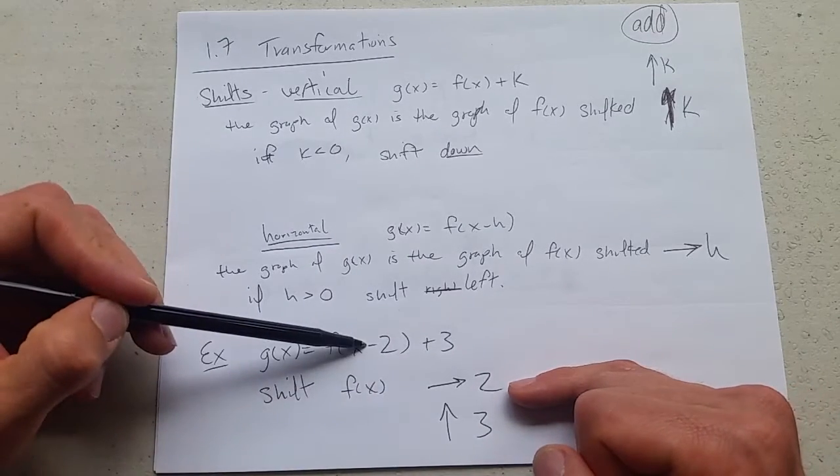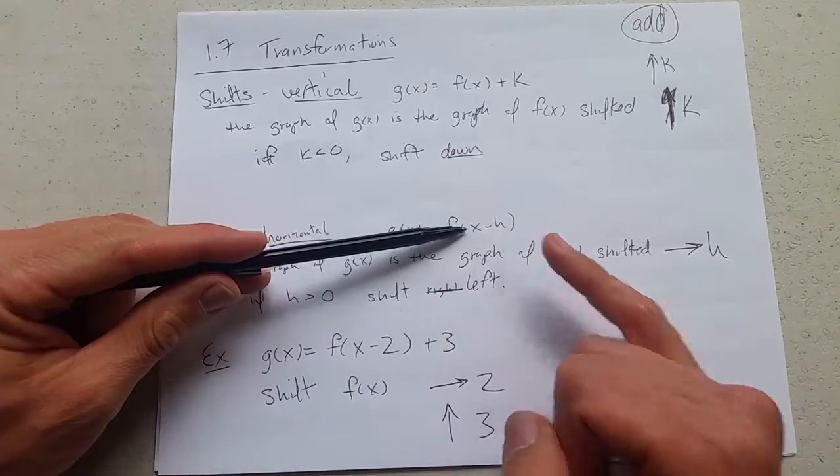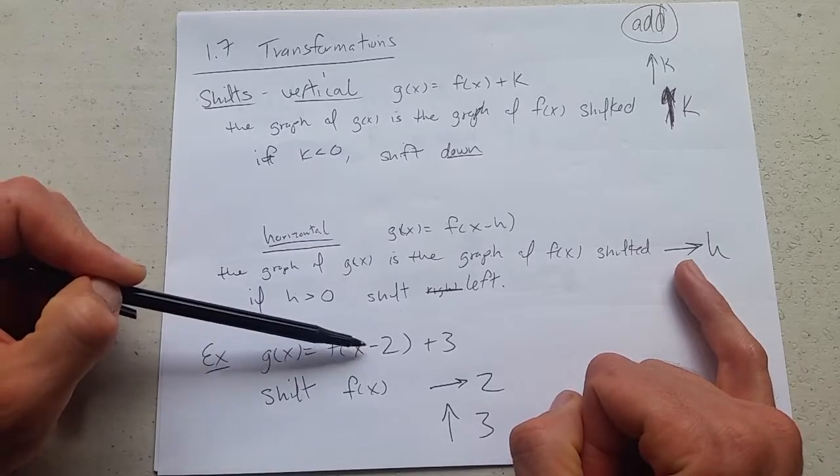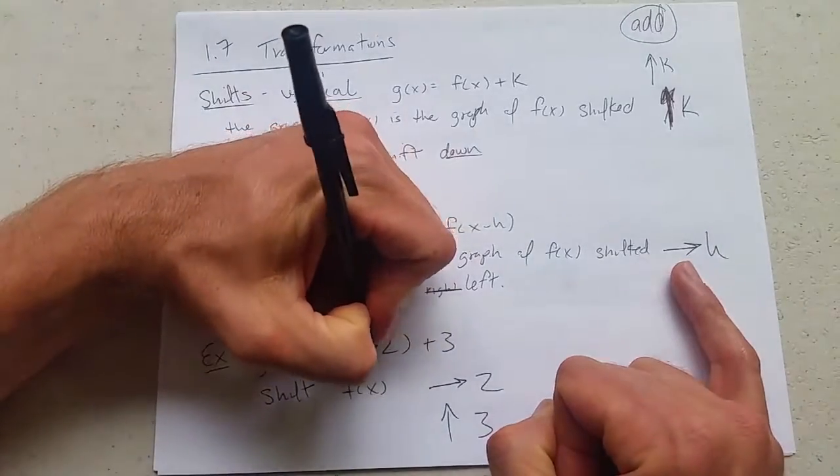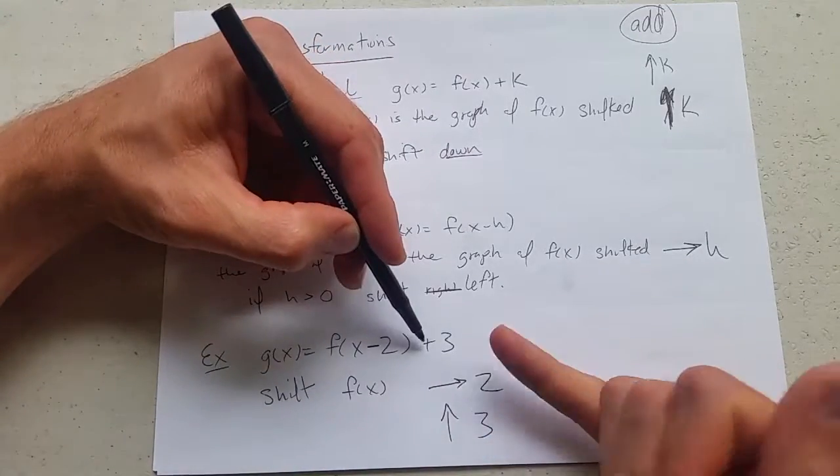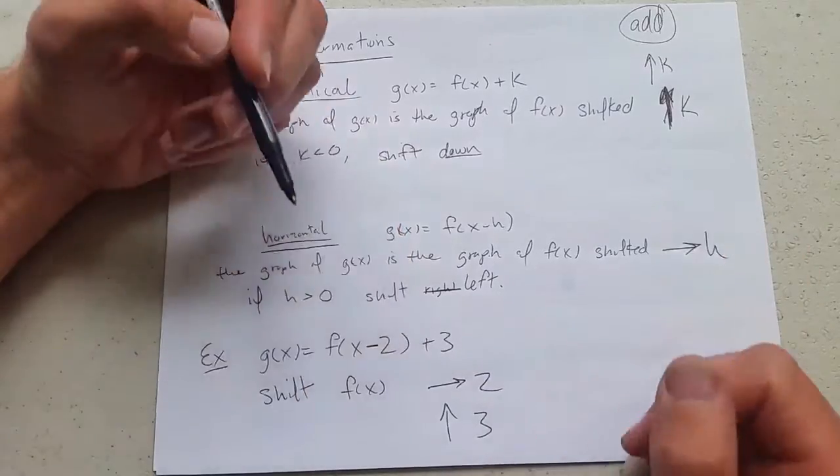What does the minus two do? It looks like it should shift—it's going to shift horizontally and it's going to shift to the right two. Now that's weird, just keep in mind horizontals are always opposite. So minus two is going to shift to the right two. This plus three is happening outside, it's vertical, and it's going to go up three.